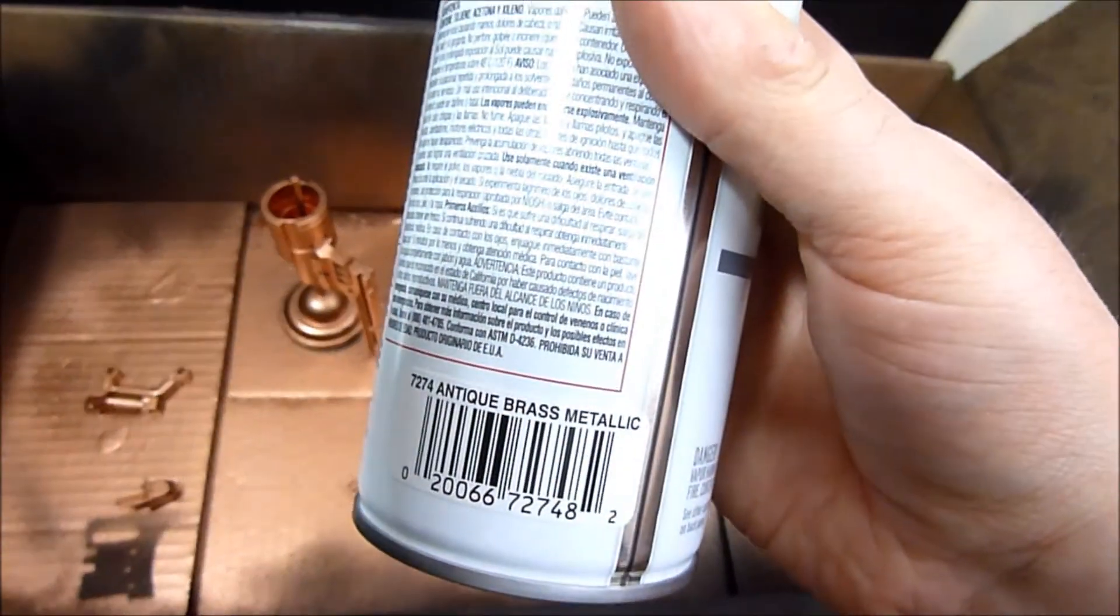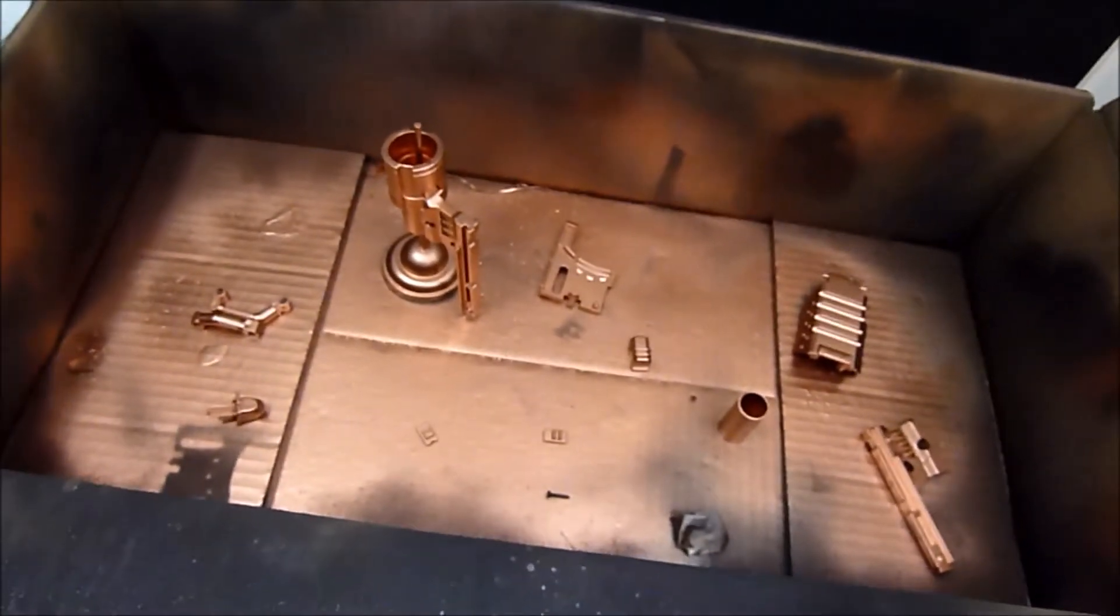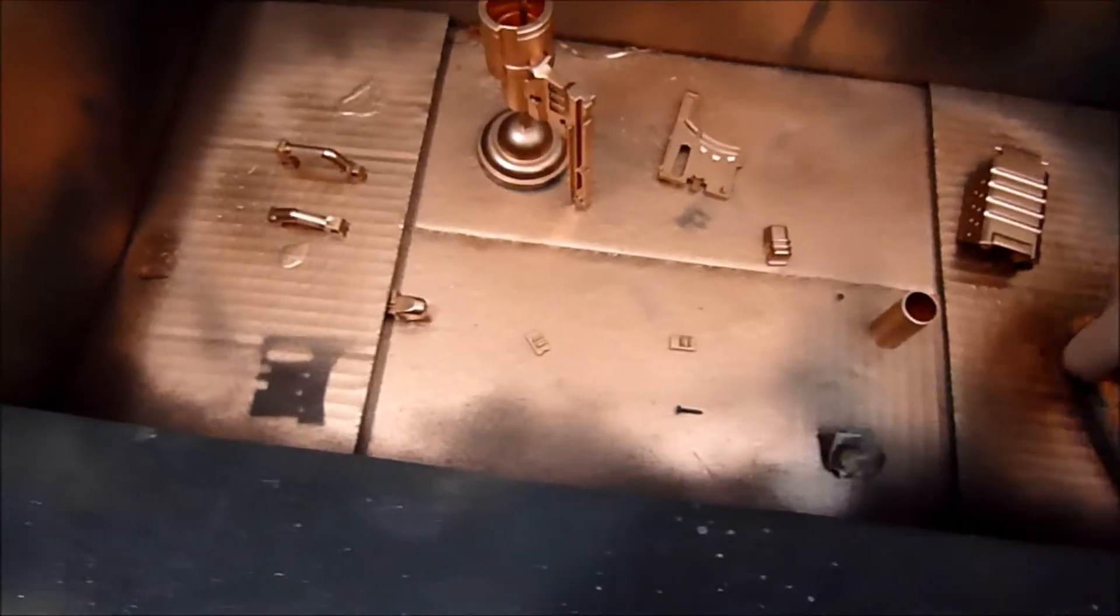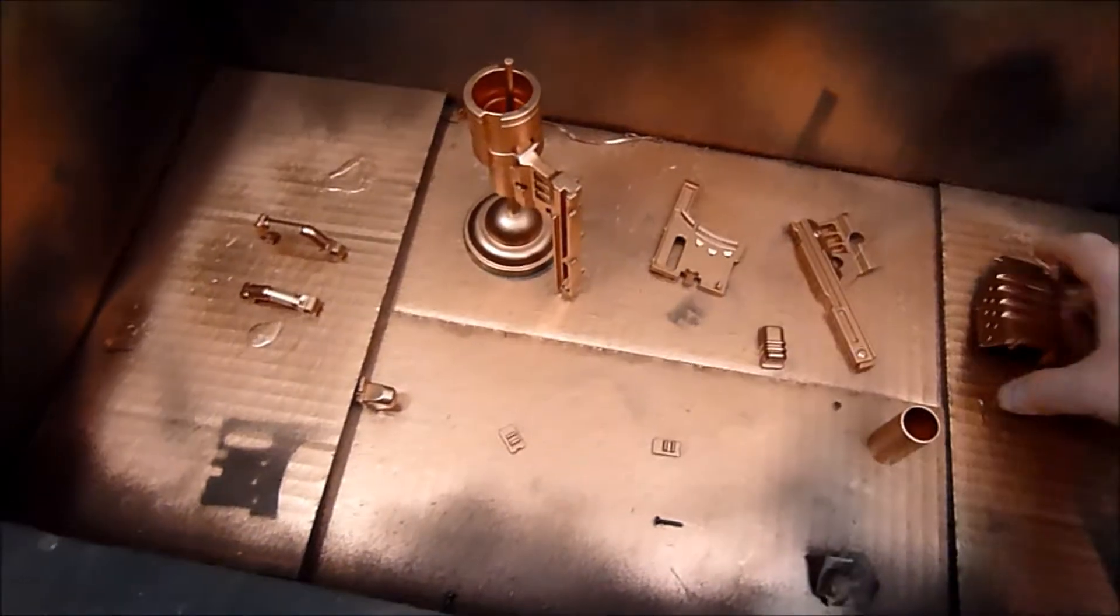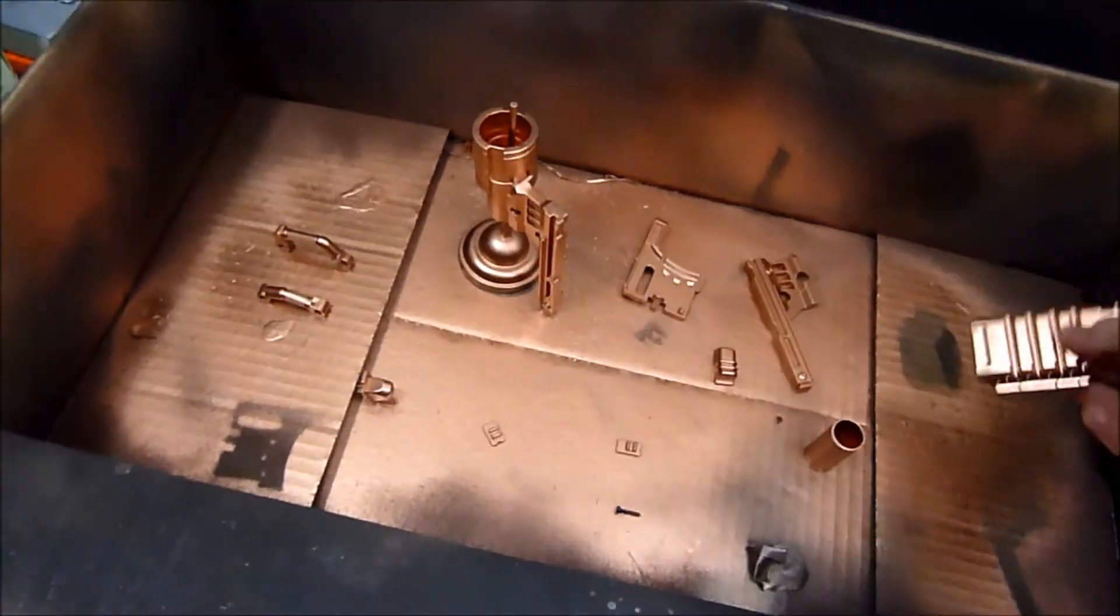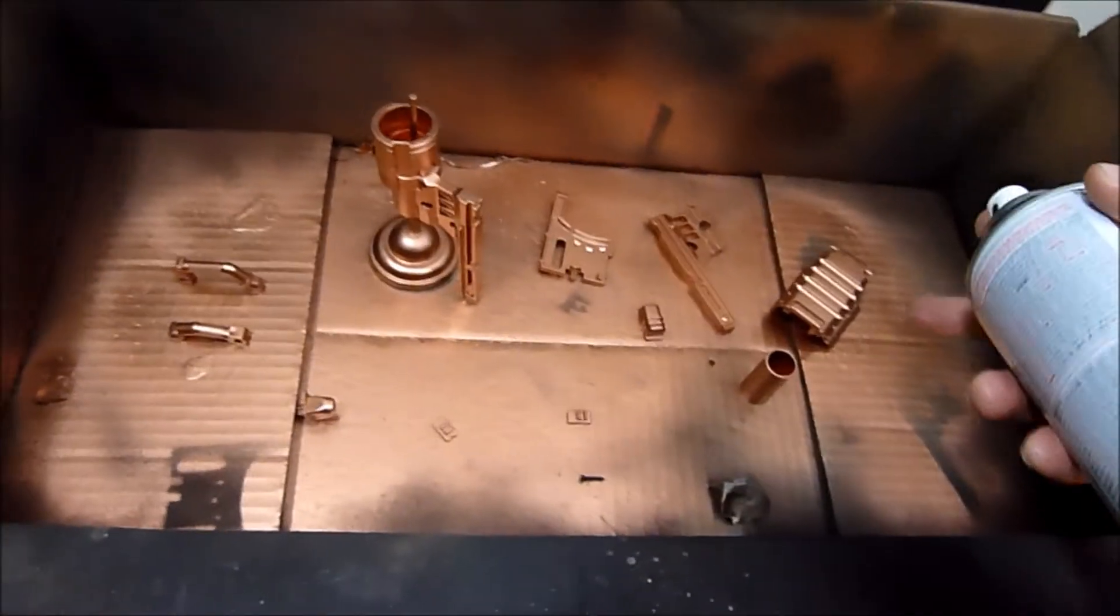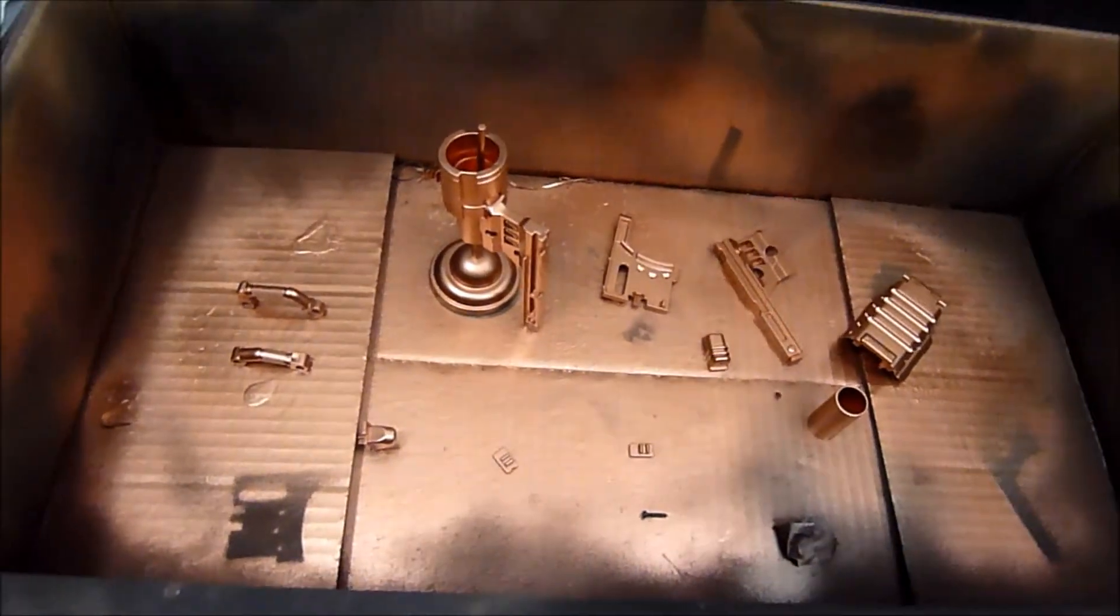This one is actually going to be one of my favorites, Rust-Oleum antique brass metallic. I was so excited to find another can of this. I'd been unable to find it locally for the longest time and then it showed up. Just be aware it does not really show up that well on just bare plastic. It has a tendency to bead up, so you want to make sure you have a coat of something else underneath. In this case we're going to antique these brass pieces with the antique brass.